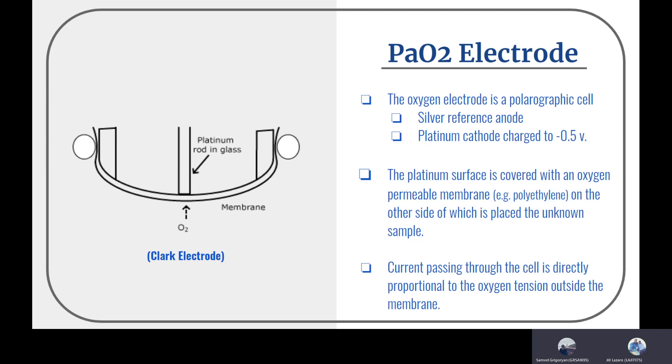The PaO2 electrode is an oxygen electrode, a polarographic cell. The platinum rod inside is covered with an oxygen-permeable membrane known as polyethylene, and on the other side is where the unknown sample is set. Based on how much oxygen goes across the membrane, that's how we calculate the oxygen concentration of the sample.